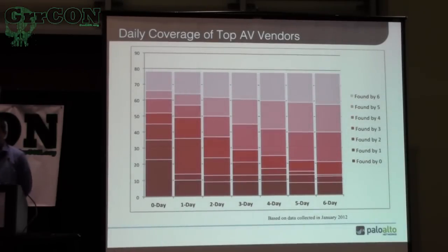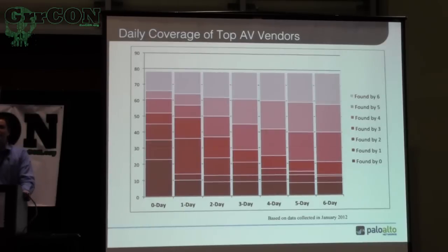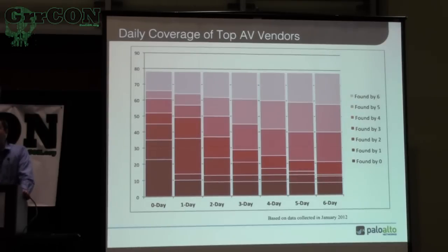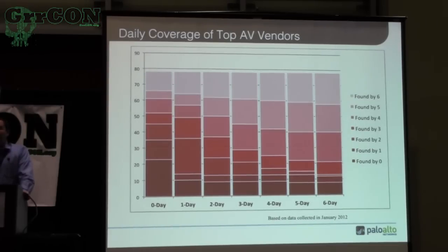Going back to the AV coverage question, this is a histogram showing the first one week of AV coverage stats. Starting from day zero when our Wildfire service first detects brand new, never-before-seen malware, and then going seven days past that — this is the breakdown we see. It's a pretty typical breakdown of how AV vendor coverage changes over time. This was taken from January of this year, and pretty much what we expected: very little coverage up front, and then coverage starts to fill in over time.